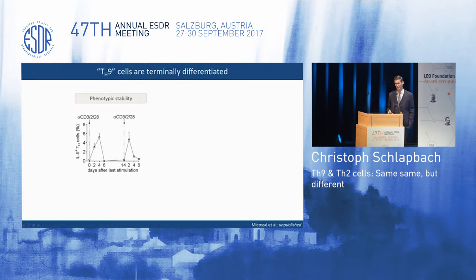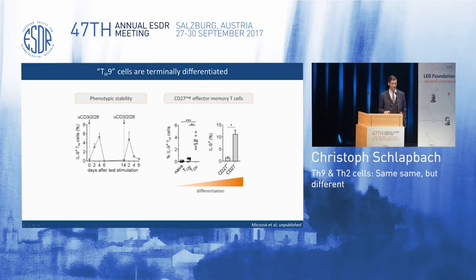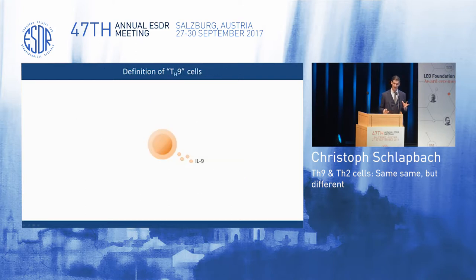The first thing we checked was whether this transient expression of IL-9 is actually inducible repetitively, and this seems to be the case. You can repetitively stimulate these cells and they continue to up- and downregulate IL-9 after multiple rounds of activation. When you look at the differentiation state, all T cells with the ability to upregulate IL-9 post-activation reside in the effector memory T cell pool, and within that pool they are CD27 negative — consistent with a very terminally differentiated phenotype.